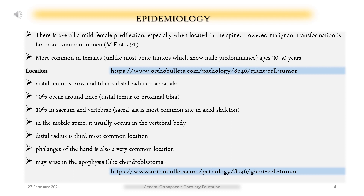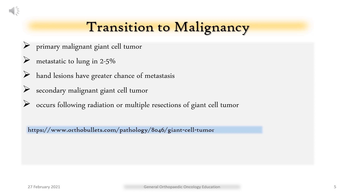Phalanges of the hand are also a common location. Giant cell tumors may arise in the apophysis, like chondroblastoma. Regarding transition to malignancy: primary malignant giant cell tumor metastasizes to lung in 2–5%, and hand lesions have a greater chance of metastasis. Secondary malignant giant cell tumor occurs following radiation or multiple resections.